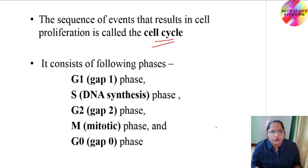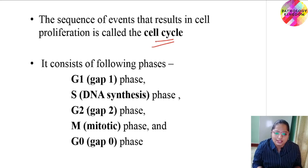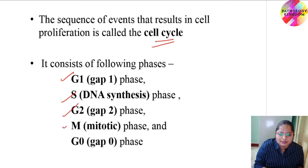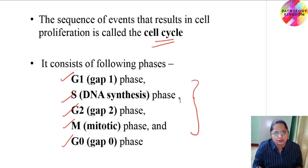It consists of following phases: G1 phase, S phase, G2 phase, M phase, and G0 phase. These are the various phases of cell cycle.